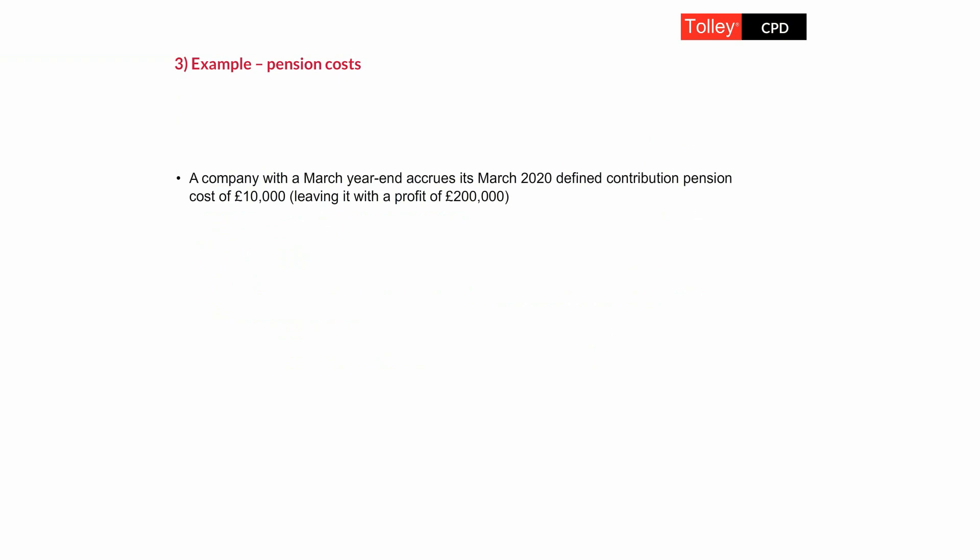Let's start with an example dealing with pension costs. Assume a company with a March year-end that accrues its March 2020 defined contribution pension cost of £10,000. After accruing that cost, it has an accounting profit of £200,000. We'll assume no other tax adjustments are needed, and that the pension contribution would be paid in the following month — April — making it tax deductible in the year ended 31st of March 2021.